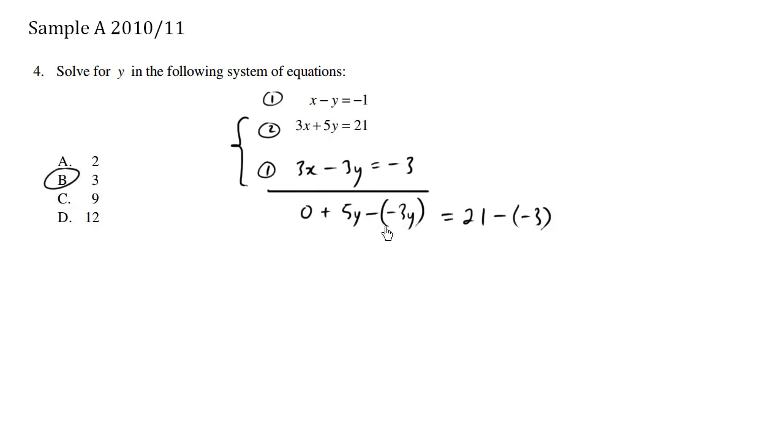So we have 5y minus 3y minus negative 3y becomes a 5y plus 3y, which becomes 8y is equals to 21 plus 3, which is 24. So y is equals to divide both sides by 8, y is equals to 3.